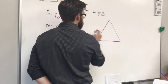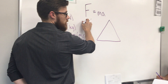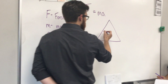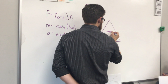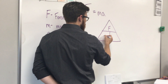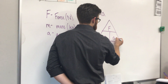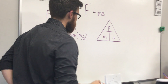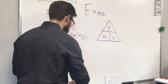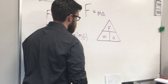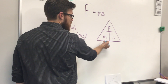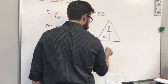One thing that helps with this type of calculation is a triangle — you'll see this triangle for different formulas. It only works for a formula that has three components, where one thing equals something times something else. In the top of the triangle is force; the bottom has mass and acceleration. If you want to find force, you'll be given mass and acceleration.